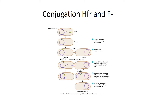An HFR cell is still F-plus — it has the fertility plasmid, it can make a sex pilus and do conjugation — it's just that the fertility plasmid is integrated right into its main chromosome. So an HFR cell is going to conjugate with an F-minus cell.